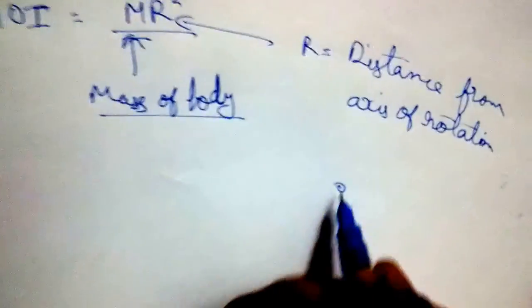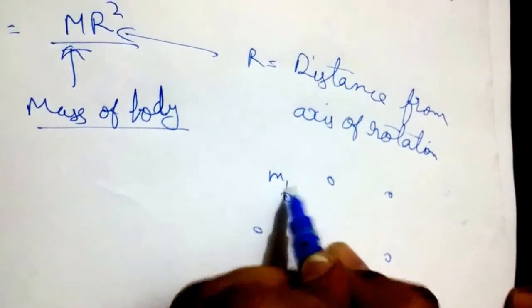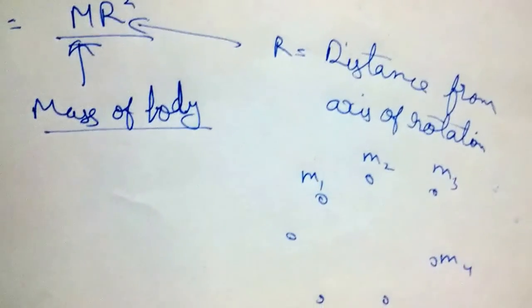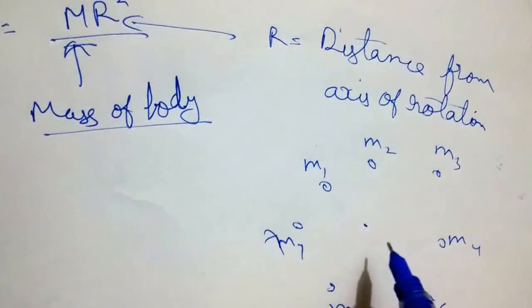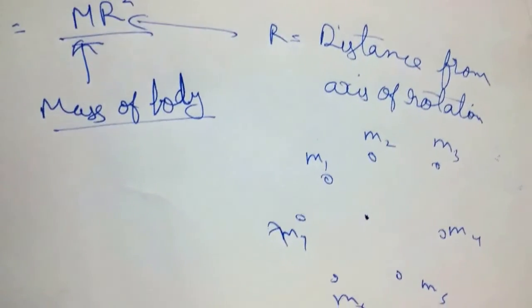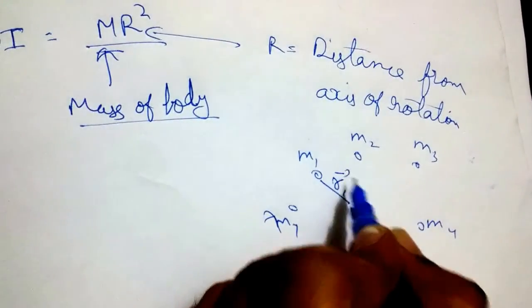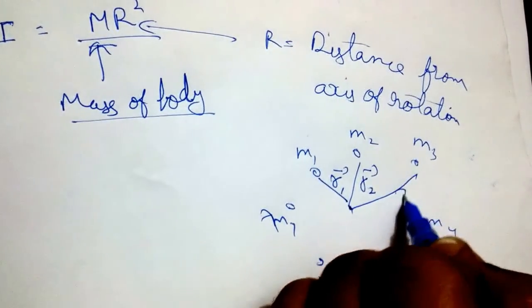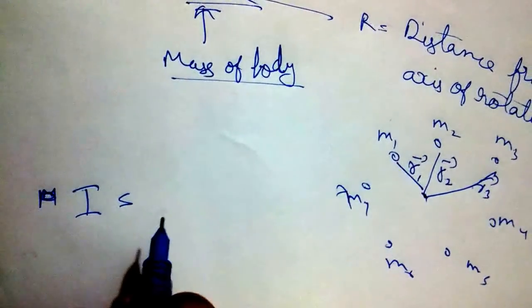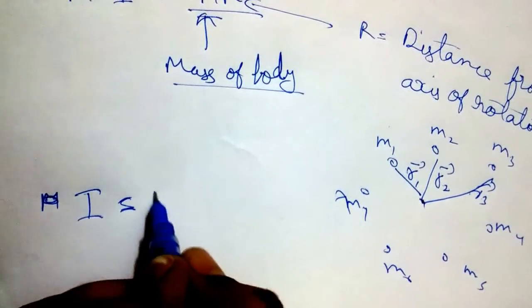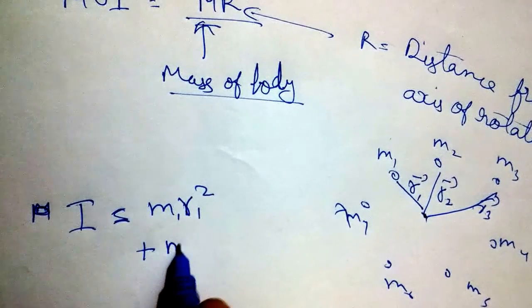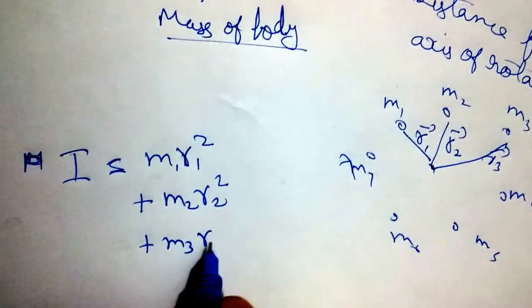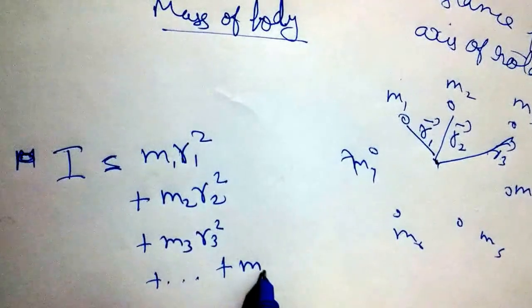Now suppose there is a system of n masses: m1, m2, m3 ... up to mn, and we have to find the moment of inertia about an axis going inside the plane of paper. Suppose r1, r2, r3 are the displacement vectors from the origin. Then the moment of inertia about this axis of rotation can be calculated as the summation of moment of inertia of individual masses about that axis.